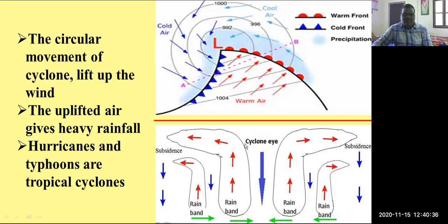Examples of tropical cyclones are hurricanes near the USA, and typhoons near the Philippines in the Pacific Ocean. These are the famous cyclones. Low pressure cyclones also form in the Bay of Bengal and the Arabian Sea. But hurricanes and typhoons lead to higher losses on the land parts near their surrounding ocean areas.